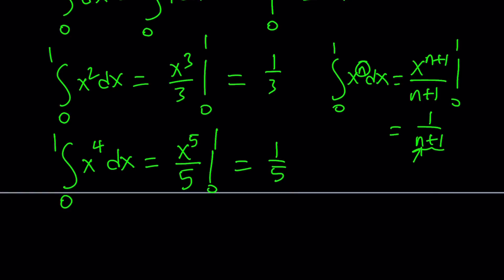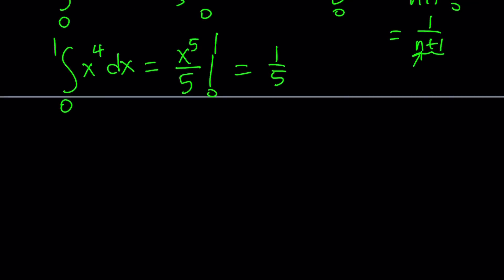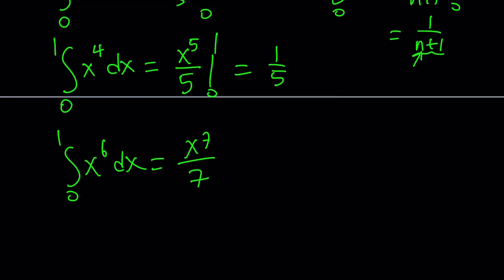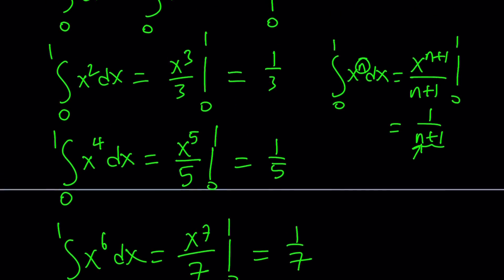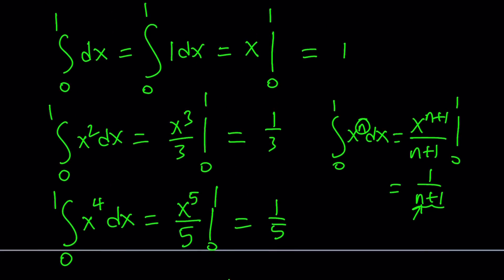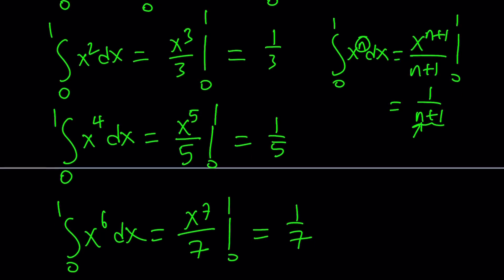Continuing the pattern one more time: the integral from 0 to 1 of x to the 6th dx gives x to the 7th divided by 7, which from 0 to 1 is just 1/7. But I need an alternating series, not just the sum.